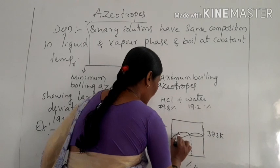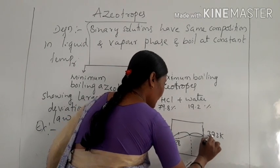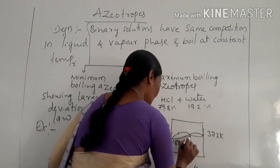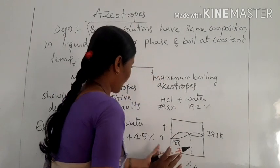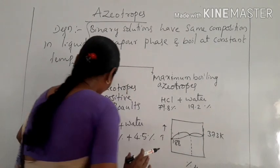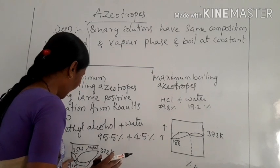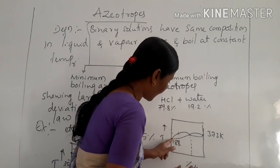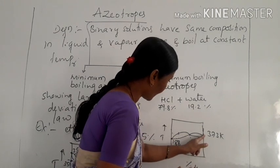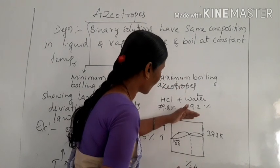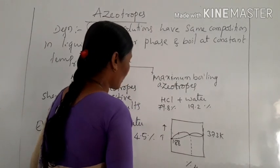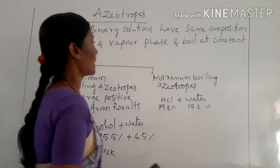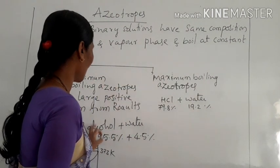The maximum boiling point is more than 373 Kelvin for this azeotropic mixture. HCl boiling point is 188 Kelvin and water boiling point is 373 Kelvin. The maximum boiling azeotropes boil at a temperature above the boiling point of either component. Azeotropes are of two types — minimum and maximum — depending on the boiling temperature of the mixture.